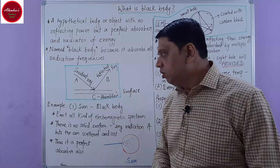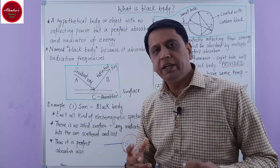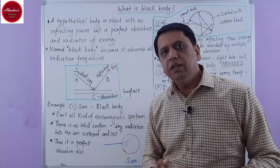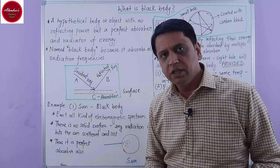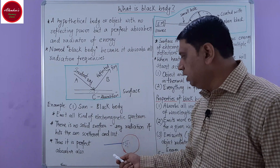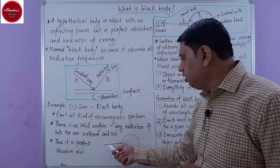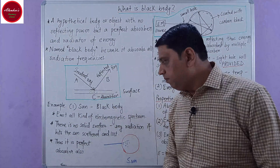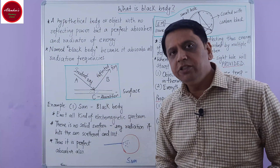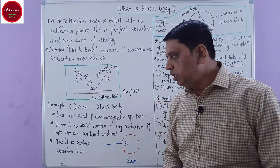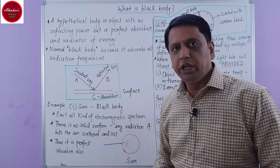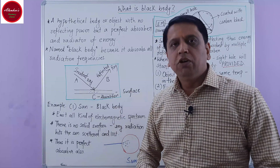A black body is a good emitter as well as a good absorber. When any electromagnetic ray or light strikes over the surface of the sun — since the sun does not have any solid surface, it is basically a plasma — any kind of ray, represented here by a blue line, that strikes over the surface of the sun will scatter and eventually get lost inside the sun. In this way, the sun absorbs radiation coming from outside, making it also a perfect absorber.